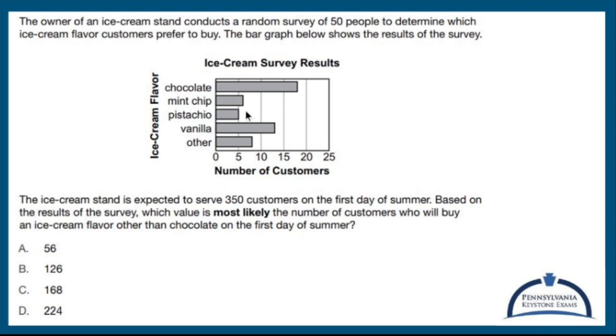Quick looking at this — 50 people — we can say something like 18 of them chose chocolate and five of them chose pistachios, so on and so forth.